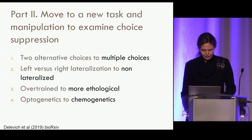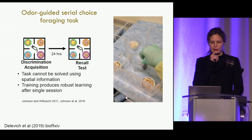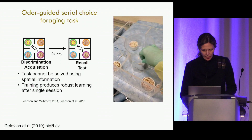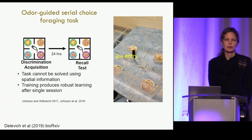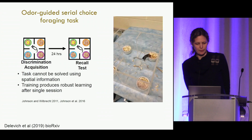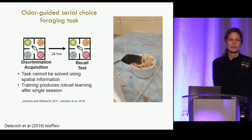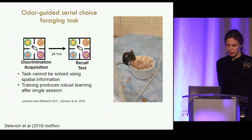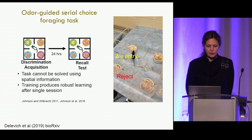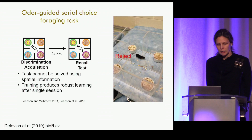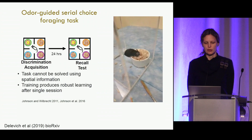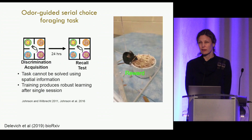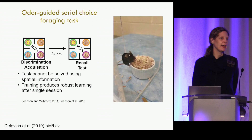The task we moved to is an odor-guided serial foraging task. There are four pots full of shavings, all with a Cheerio fragment buried under them so they all smell slightly like Cheerio. We're not testing how good the animals' noses are — we want to test how well they can learn about a conditioned stimulus (CS+) that predicts where an accessible Cheerio is. Only one of the four pots has an accessible Cheerio. The animal is released from a cylinder, enters, rejects some pots, finds the one it thinks is a good choice for digging, and retrieves the Cheerio. The pots are visually identical but smell different, and their location is shuffled each trial, so animals must use the odor CS+ to find the reward.